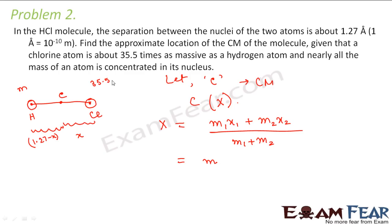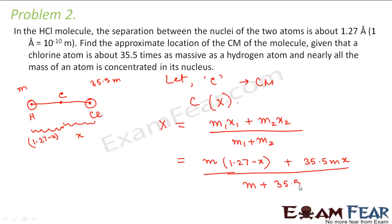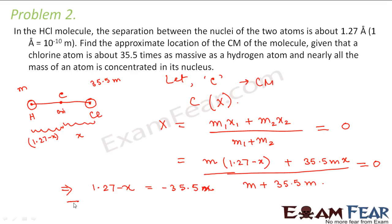So this gives us M·(1.27 − X) + 35.5M·(X) divided by (M + 35.5M). We have assumed this is our center of mass and this is the origin, so the coordinate of the center of mass should equal 0. We equate to 0 and solve: 1.27 minus X equals minus 35.5X, which gives X equals minus 0.037 angstrom.